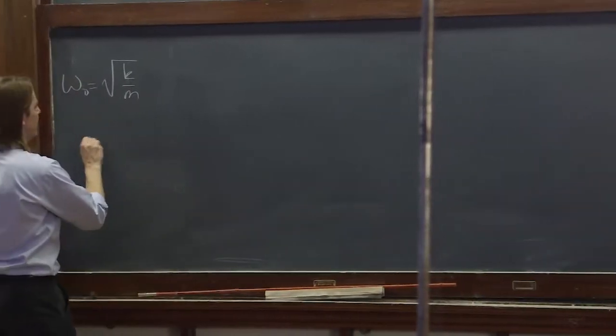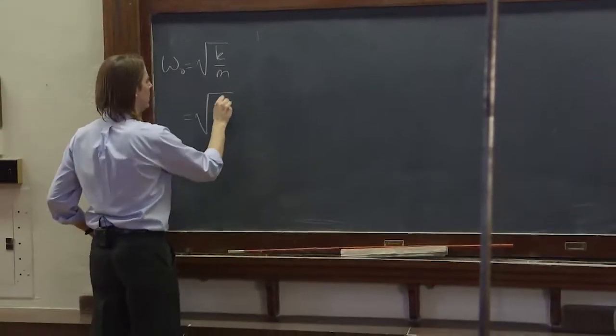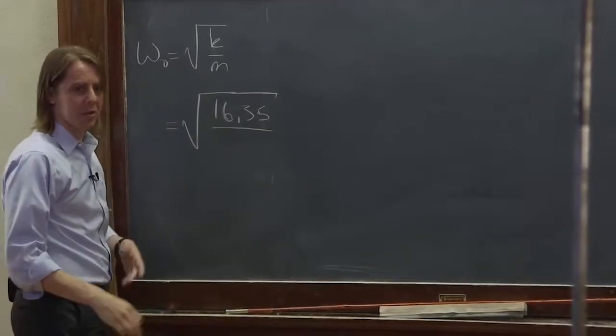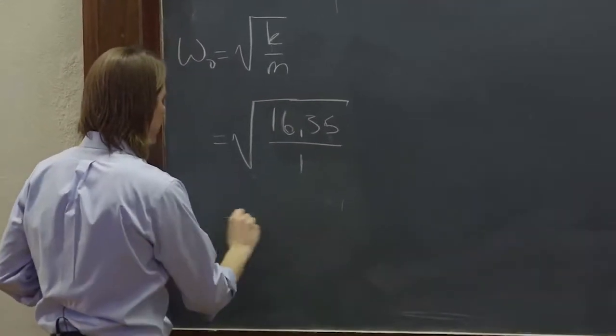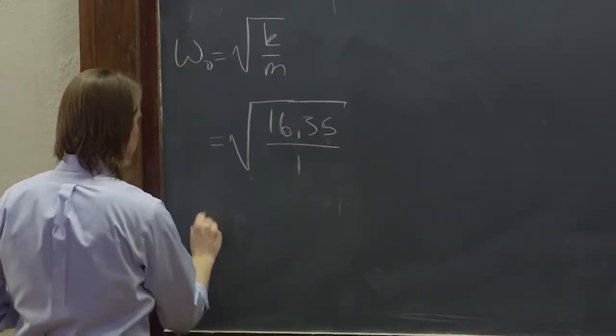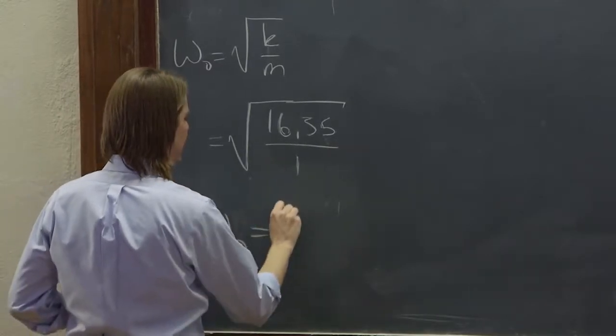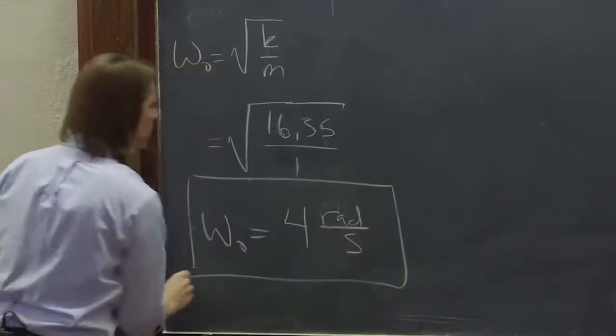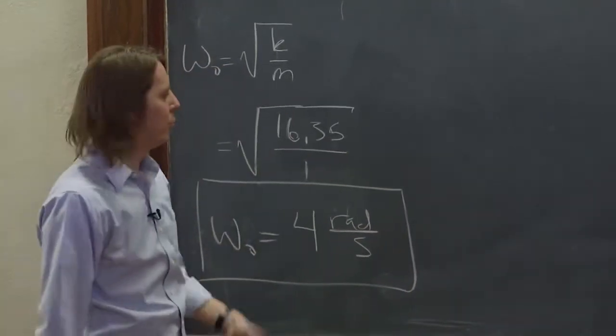So that's k, the square root of 16.35. And the mass, it's a one kilogram mass. It says on there one kilogram. So omega nought, according to the equation of motion, should be about four radians per second. Square root of 16.35, 4.04.